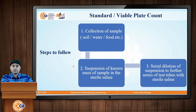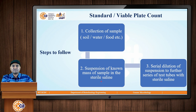Now let us go ahead and see the procedure of standard plate count. The first step is collection of sample. After the sample is collected, it will be taken on a unit weight basis, like 1 gram of soil or 1 ml of water. The unit weight of the sample will be put into a sterile saline solution where the mass of sample will be suspended. The sterile saline is used as the isotonicity agent for the cells. Now these samples would contain numerous microorganisms, hence we need to perform the third step of serial dilution, which decreases the count of microflora so that we can easily count them.